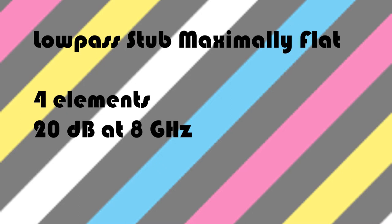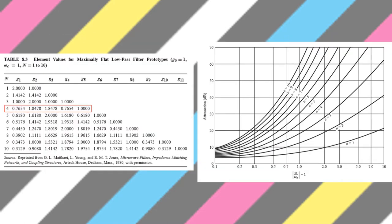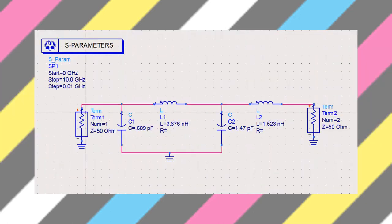The second filter we designed was a maximally flat low-pass stub filter. The filter had four elements and an attenuation of 20 dB at 8 GHz with a cutoff frequency at 4 GHz. To design the filter, Pozar figure 8.26 was used to determine the number of elements required for a given attenuation and cutoff frequency. Table 8.3 was used to determine the element values for maximally flat filters. The low-pass prototype was simulated in Microwave Office.